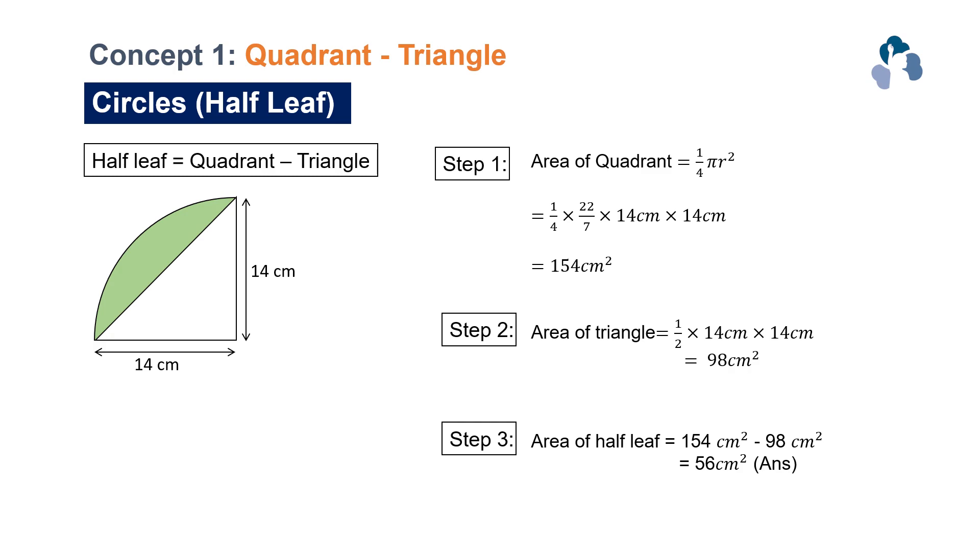So next is to take what you have done on step 1 to subtract step 2. So take the area of the quadrant minus the area of the triangle, and this will help you find the area of the shaded region.